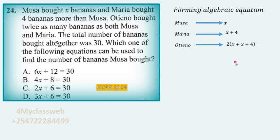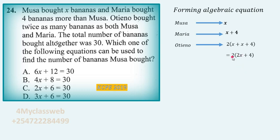To remove the bracket, we first simplify what is inside it: x plus x gives us 2x plus 4. So inside the bracket we have 2x plus 4, and then we multiply by 2. Since 2 is a common factor outside the bracket, to remove the bracket we multiply 2 by everything inside — that is 2 multiplied by 2x, plus 2 multiplied by 4.